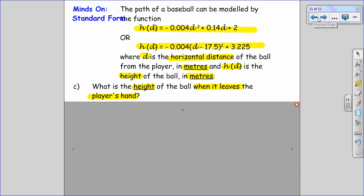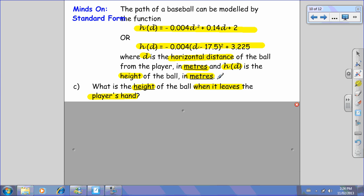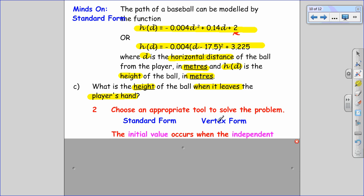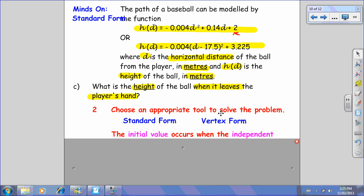Part C asks me for the height of the ball when it leaves the player's hand. That's really, really important. So when it leaves the player's hand is critical. It tells us when, just as it goes. So the ball's still in the player's hand in that split second when it leaves. That's really standard form, isn't it?